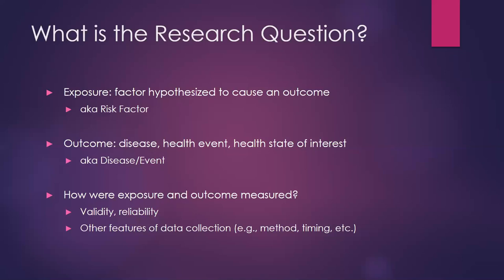Once we've established the study design, we want to think carefully about how they actually measured exposure and outcome. Are the measures valid — meaning are they likely close to the truth — and are they reliable — can you get consistent results if you ask the same person at multiple time points, or if different people rate the same observations? If they didn't have a precise or accurate measure, you might say this study doesn't give convincing evidence that the exposure is causing the outcome.